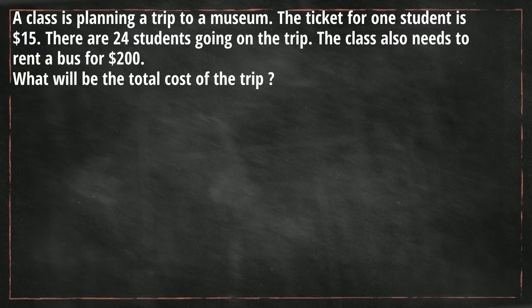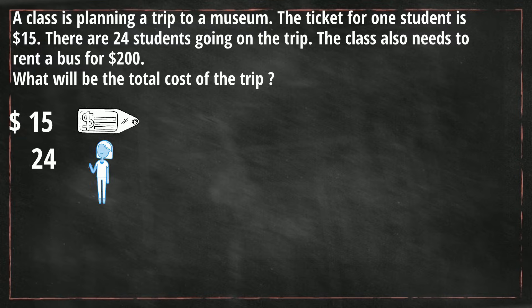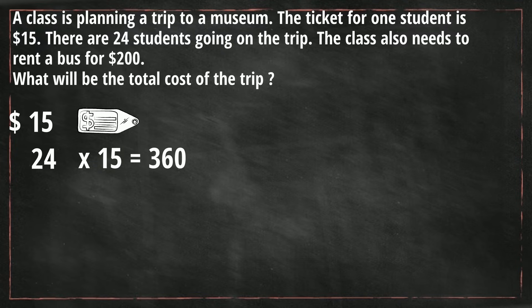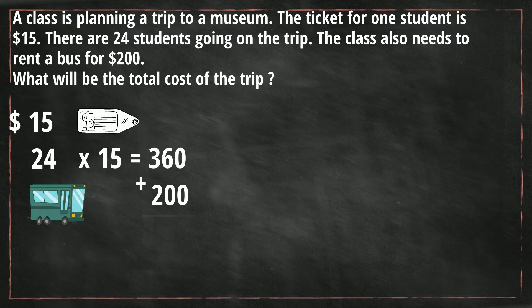One ticket costs $15 and we have 24 students, so for the total cost of the tickets, we're going to go 24 times 15. When you multiply 24 times 15, that equals $360. Now we need to rent the bus for $200, so we're going to add $360 plus $200, and that gives you a grand total cost of the museum trip of $560.